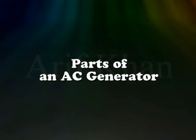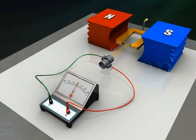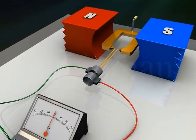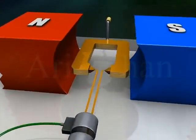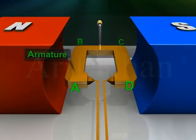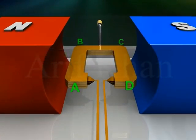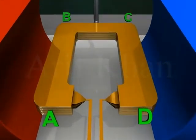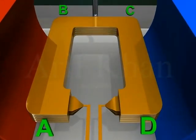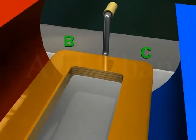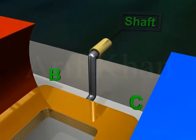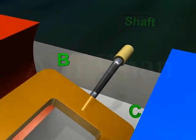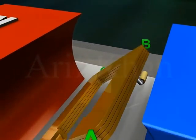Parts of an AC generator: An AC generator has an armature ABCD — it is a rectangular coil with many turns wound around a soft iron core. It also has a shaft, which can be rotated rapidly.